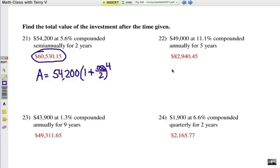Number 22. You're going to take your principal, 49,000. And inside your parentheses, you're going to have 1 plus. The interest rate is 11.1, so it's .111. How many times per year are you going to compound it annually? So, it's once. You don't actually have to do any dividing there at all. Now, if it's compounded once a year for 5 years, then it will be compounded 5 times.